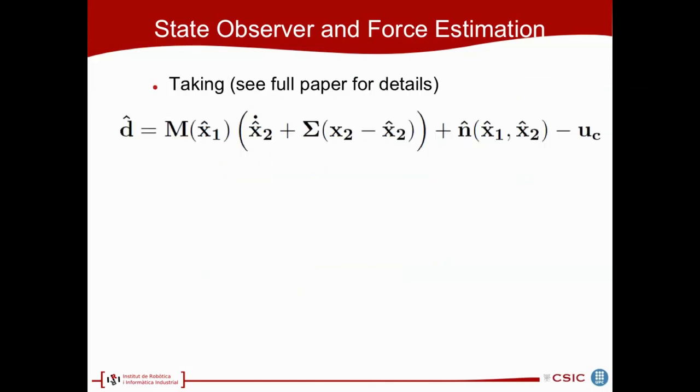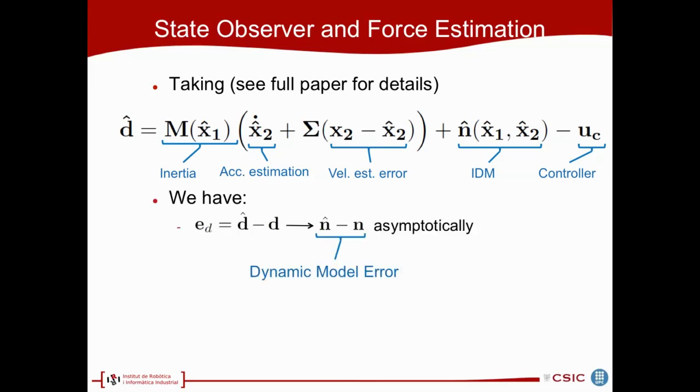After some transformations, which you can see in the full paper, we obtain this expression for the force estimation. We have the inertia, the acceleration estimation, the velocity estimation error, the inverse dynamic model, and the controller action. We have that the force estimation error tends asymptotically to the dynamic model error, only if this matrix here is positive definite. But this matrix, all the parameters are defined by the user, so it is quite easy to make it converge.